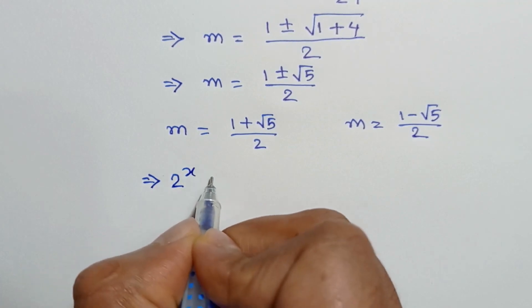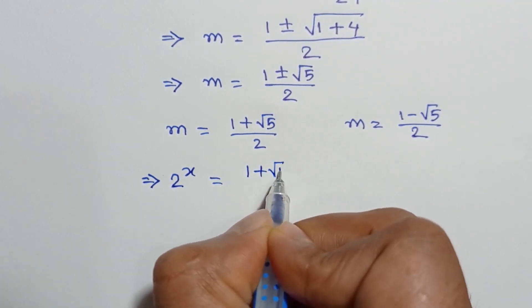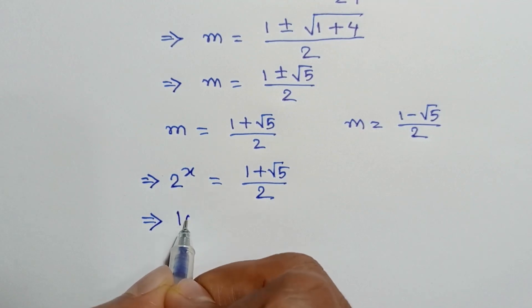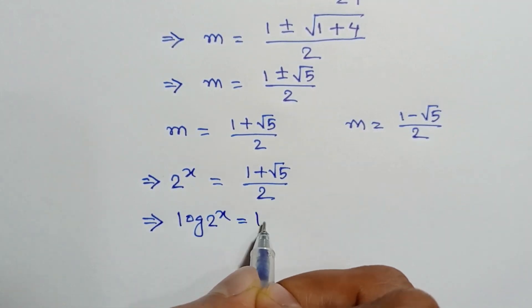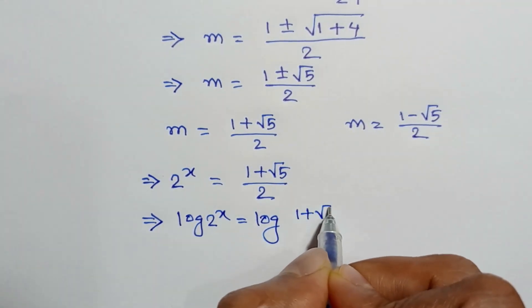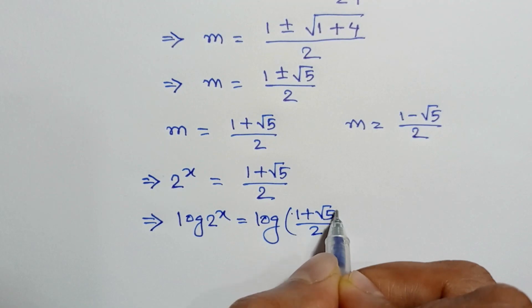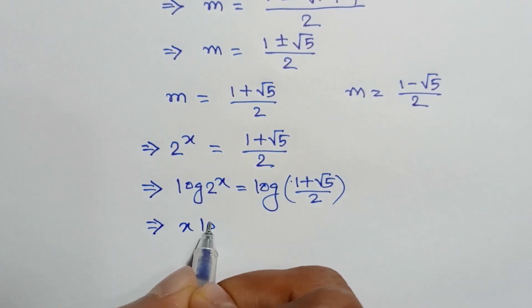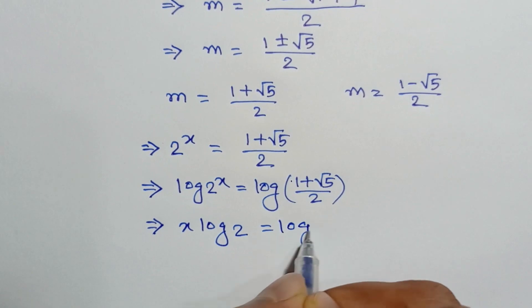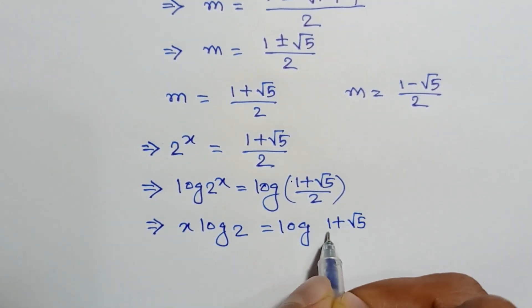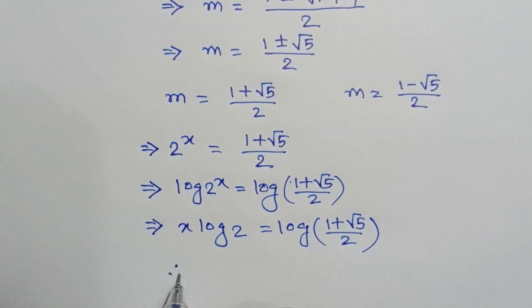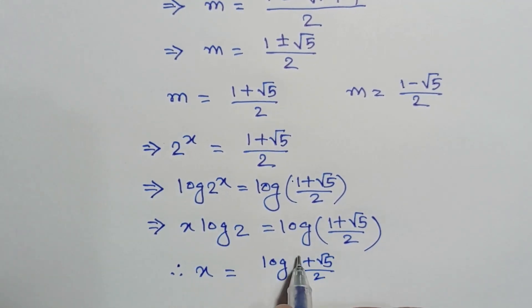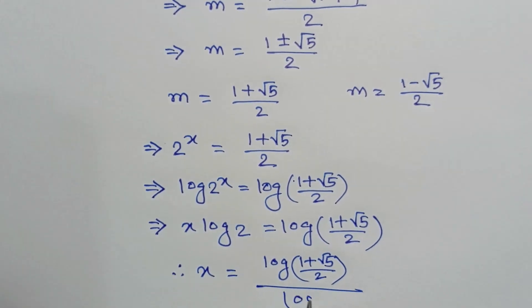Substituting back, 2 to the power x = (1 + √5) / 2. Taking log of both sides: log(2^x) = log((1 + √5) / 2), so x = log((1 + √5) / 2) / log(2).